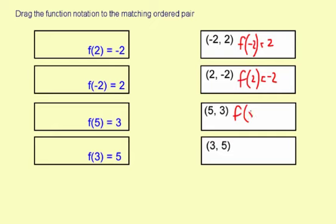5 is the input, so f of 5, that's how you read it, equals 3.